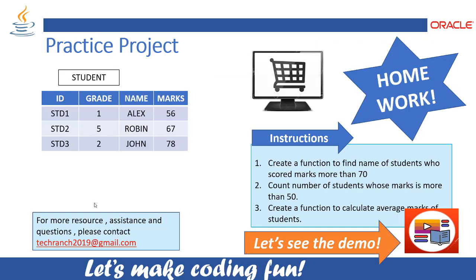Now let's take a look at the practice project. We have a student table with columns: ID (varchar type), grade (number type), name (varchar type), and marks (number type). The practice project requires: create a function to find the names of students who scored more than 70, count the number of students whose marks are more than 50, and create a function to calculate the average marks of students. We are going to create three functions, starting with calculating average marks.